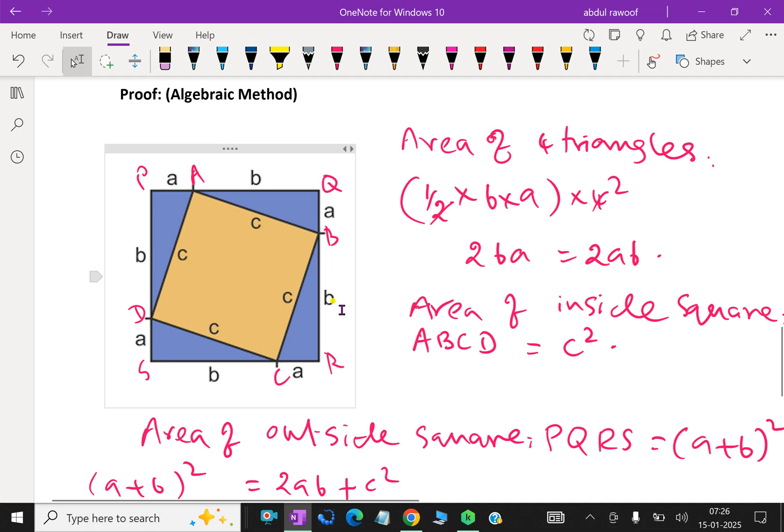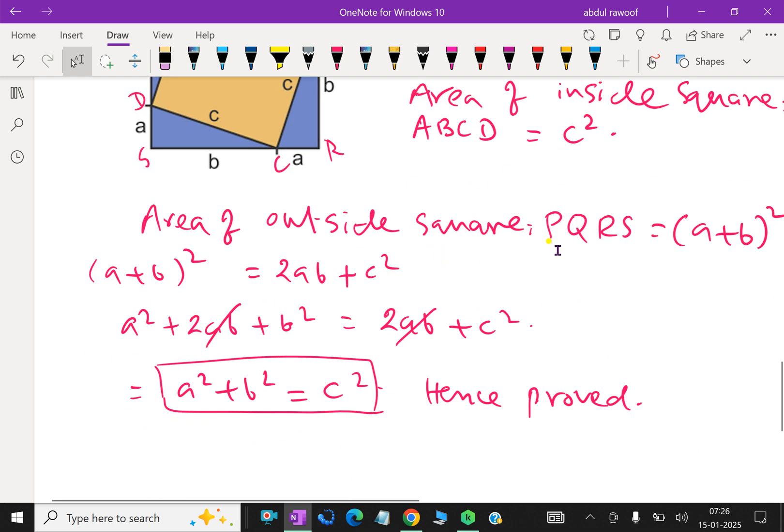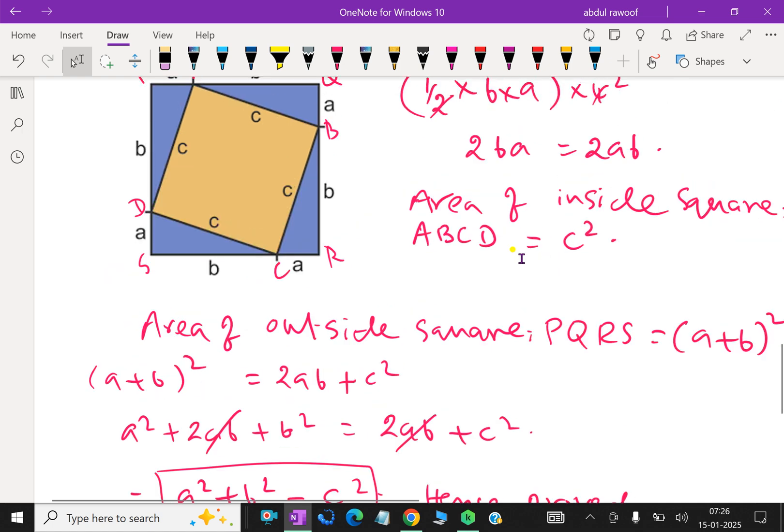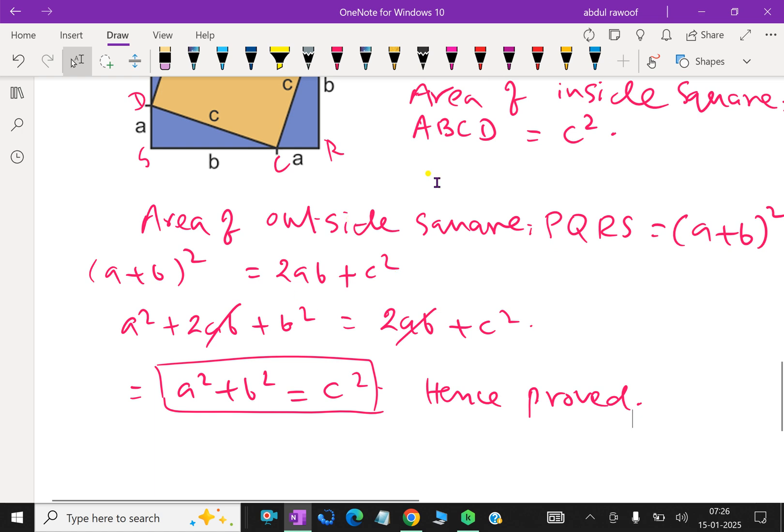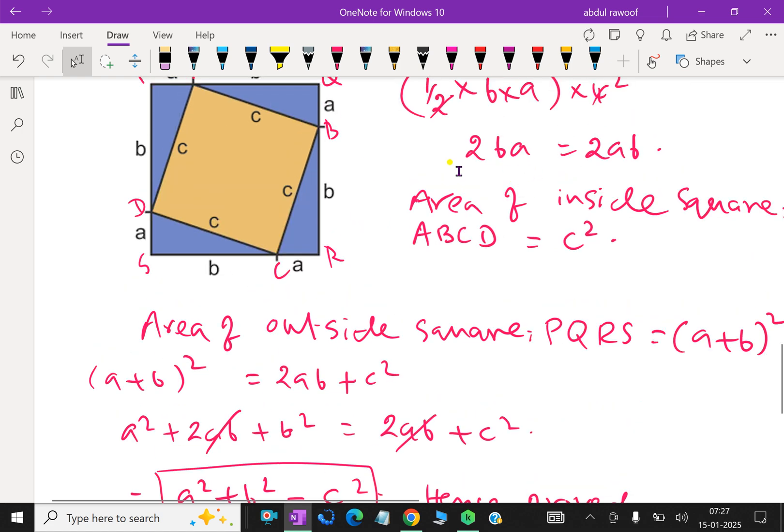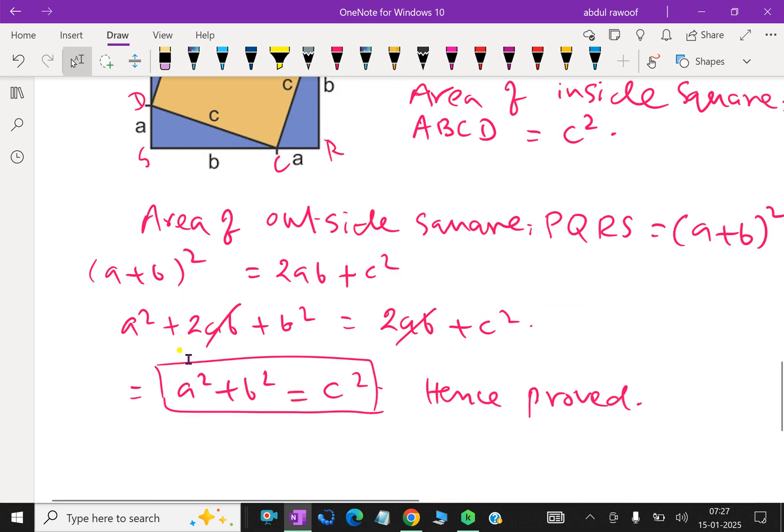Then area of the outside square is the sum of the area of four congruent triangles plus inside square. That is, area of the outside square PQRS is equal to (A + B)², because the side is A + B. That is equal to area of four triangles 2AB plus area of the inside square C². So both equating and expanding (A + B)² which is equal to A² + 2AB + B².